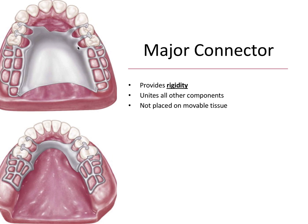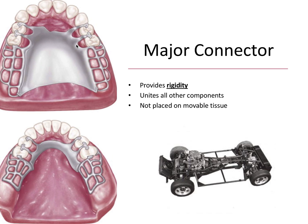The major connector is the thickest central component of the metal framework. You can see an example for a maxillary major connector and here is an example for a mandibular major connector. The primary function of the major connector is that it provides rigidity for the partial, and this is so critical and almost guaranteed to be involved in at least one question on the board exam. So definitely remember that the primary function of a major connector is to provide rigidity. I also think of the major connector like the chassis of a car that all the other components are attached to.